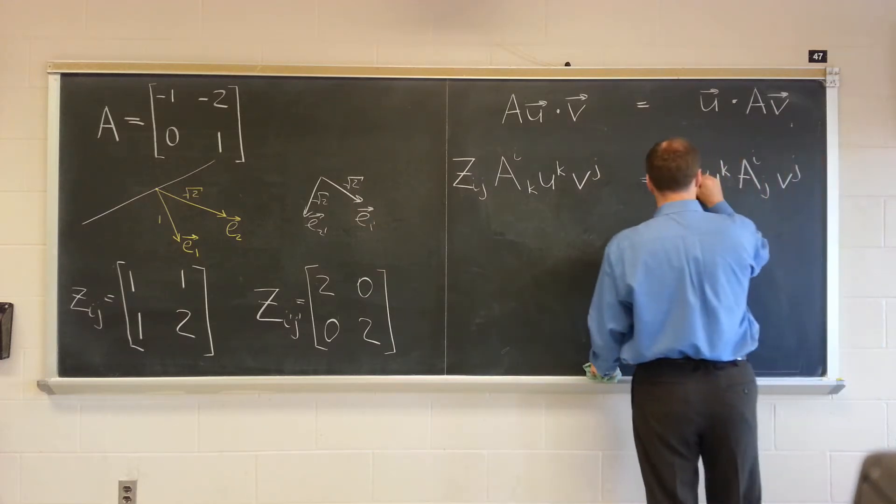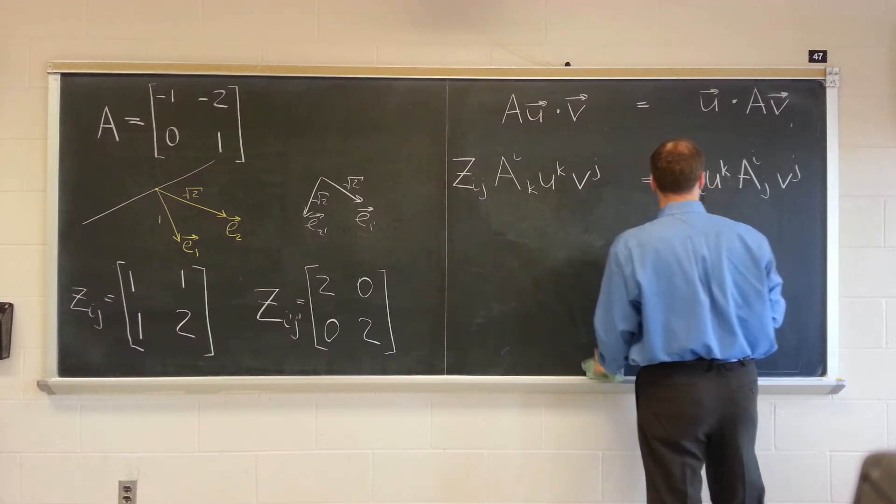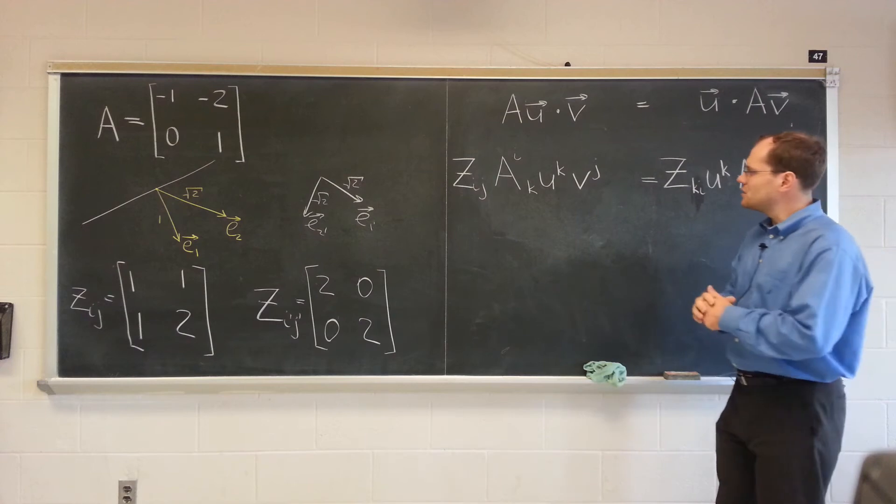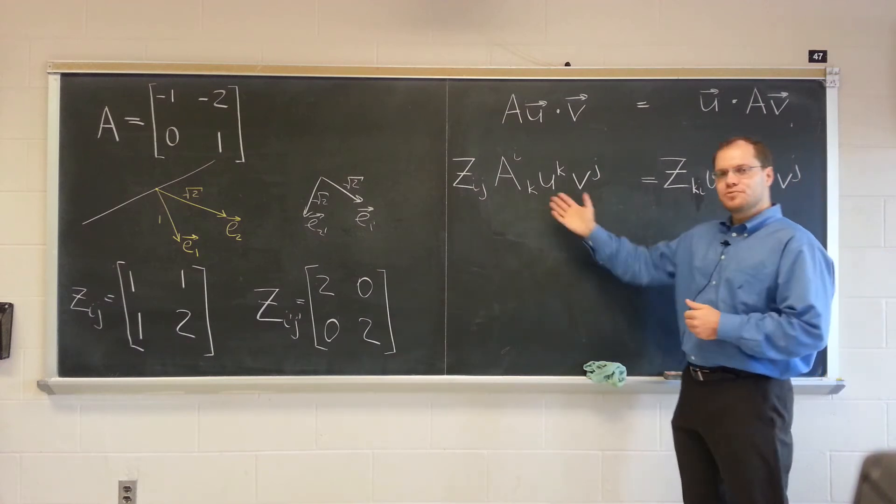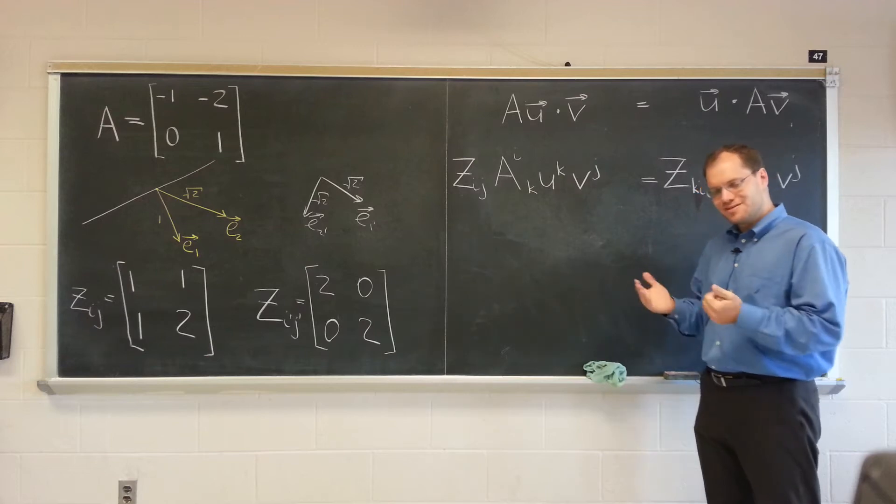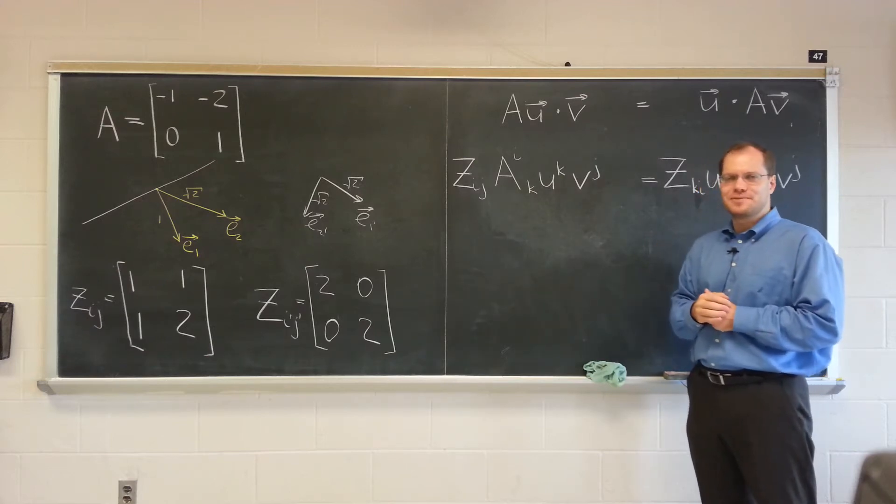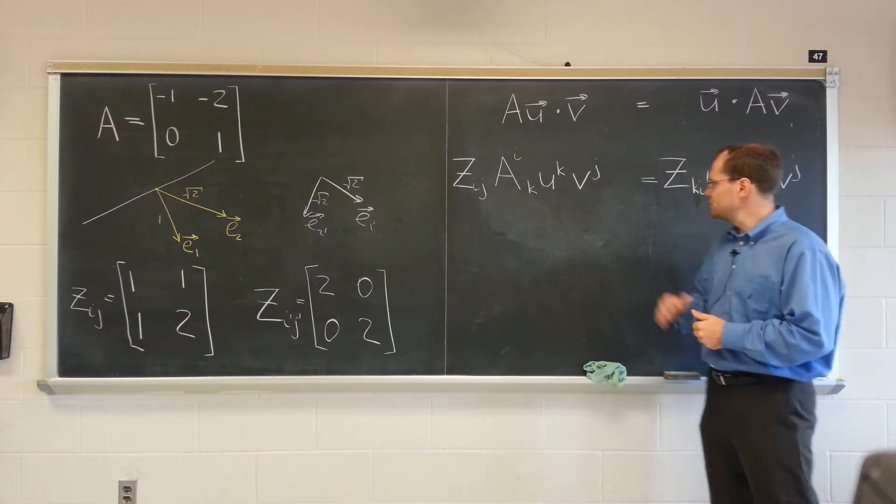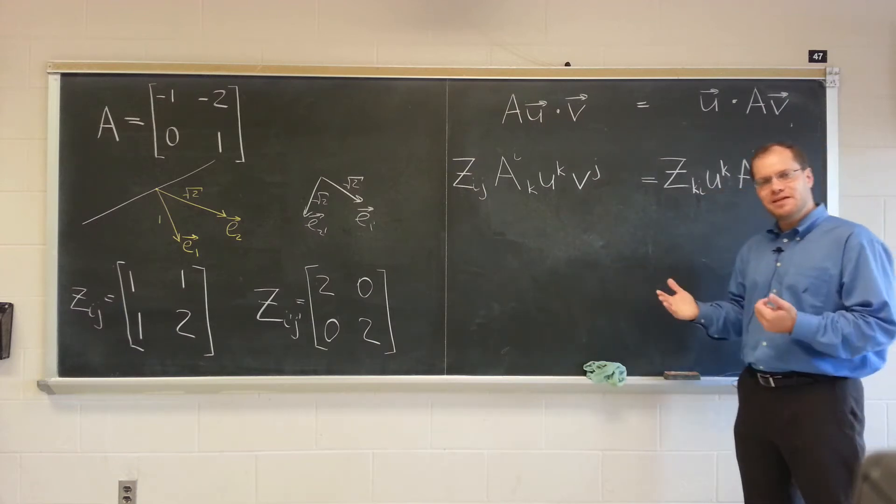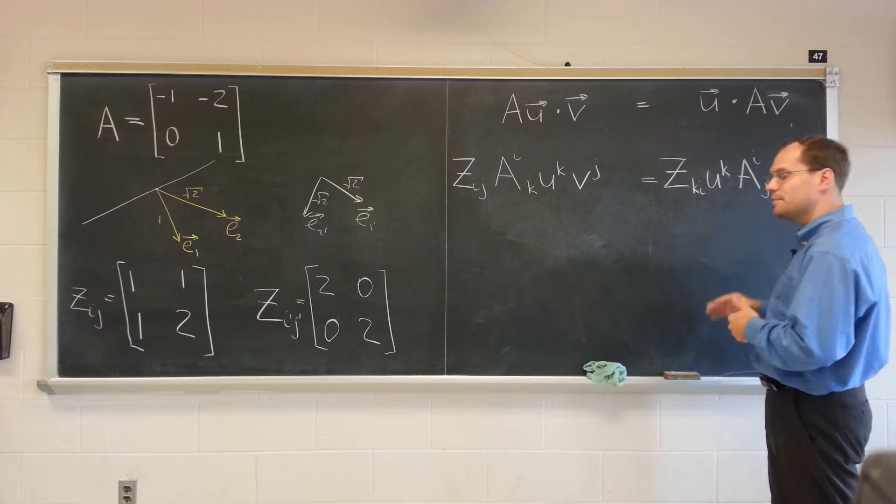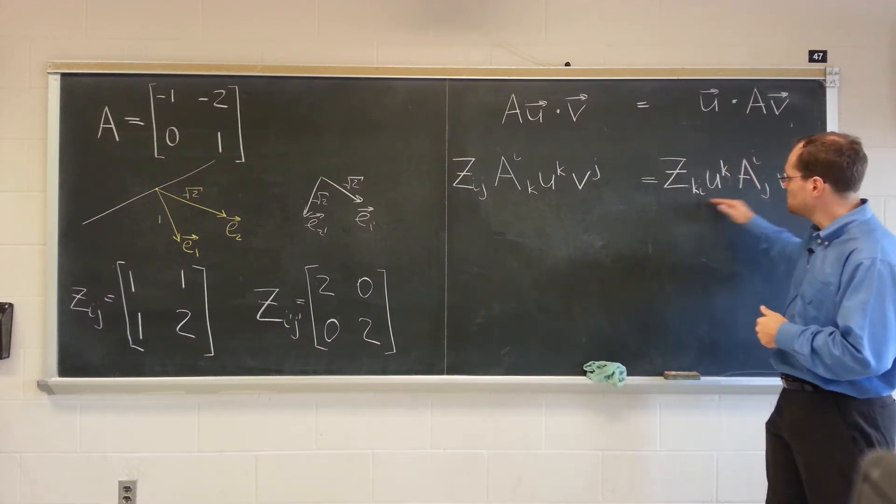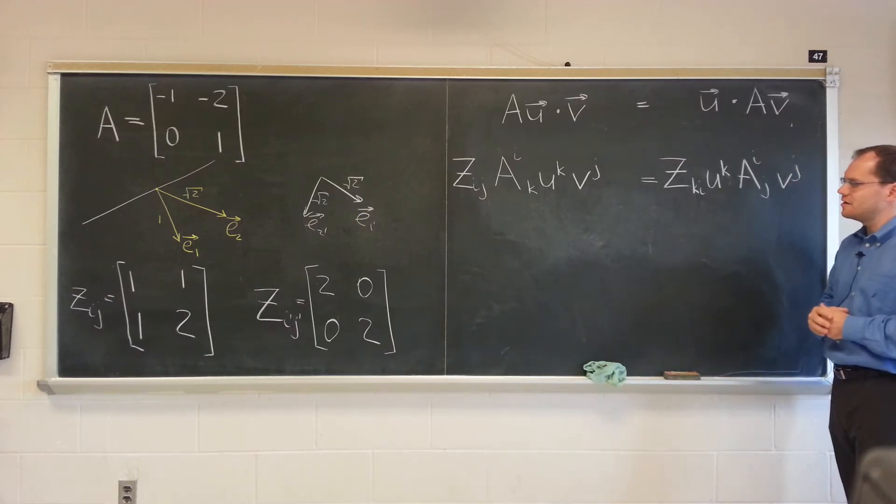And the nice thing about the tensor notation is that we don't need to worry really about the placement of indices. Excuse me. That we do have to worry about. We don't have to worry about the order of the terms. So even though this might not make sense in matrix notation if we wrote them in this same order, we have to think much harder and be much more careful in writing this in matrix notation. Tensor notation doesn't really care.